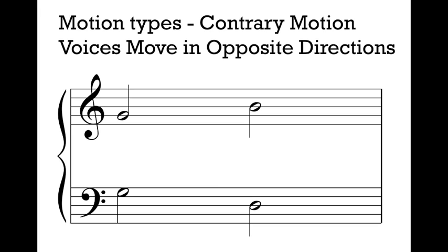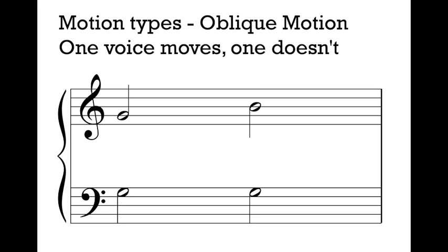Contrary motion is a favorite. We love contrary motion and want to use it all the time. Another commonly found motion type is oblique motion. Oblique motion occurs when one voice moves and one stays the same. In this particular example, the upper voice moves up from G to B, and the lower voice stays the same — it starts on G and ends on G. It doesn't matter if the voice moves up or down; all that matters is that one moves and one doesn't. We're going to call this oblique motion, and it's another common motion type we see a lot in music.